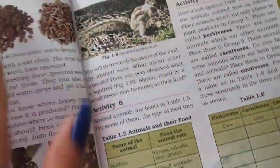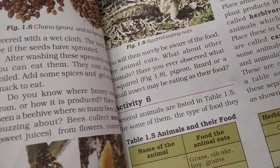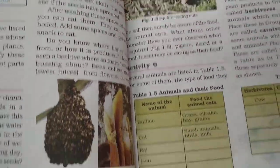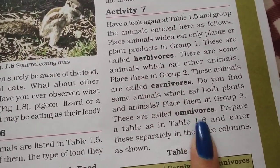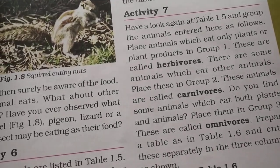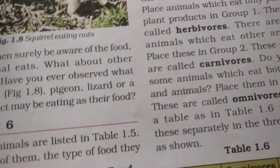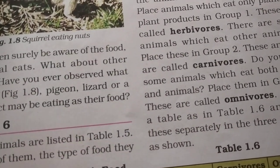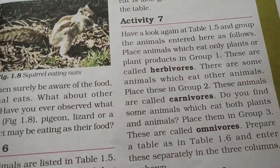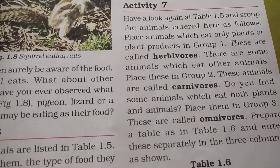Now coming to the part of animals. There are different types of animals. What are herbivores? Animals which eat only plants and only plant products are called herbivores. For example, elephants, rabbits, cow, etc.